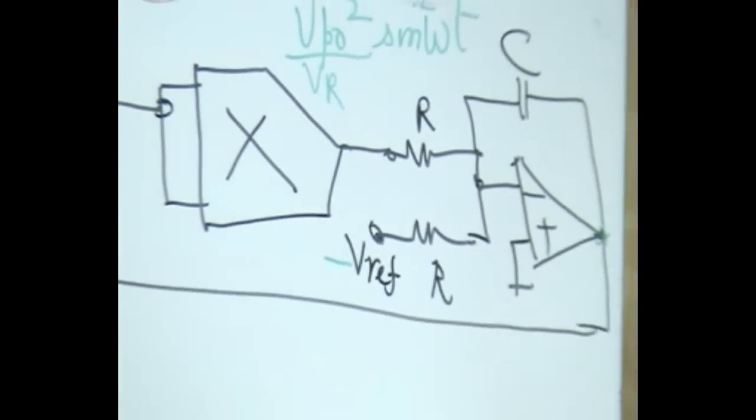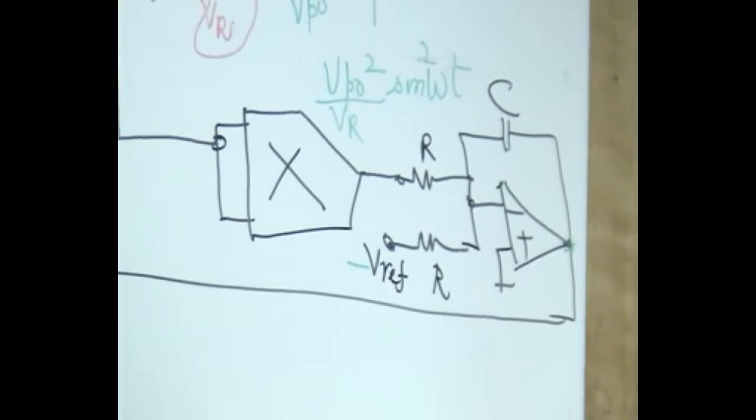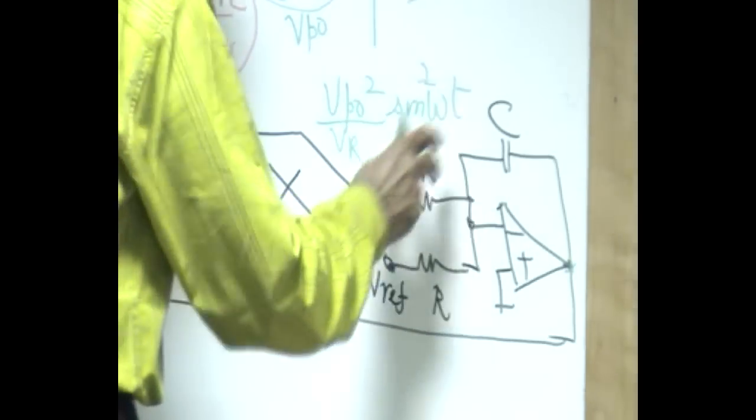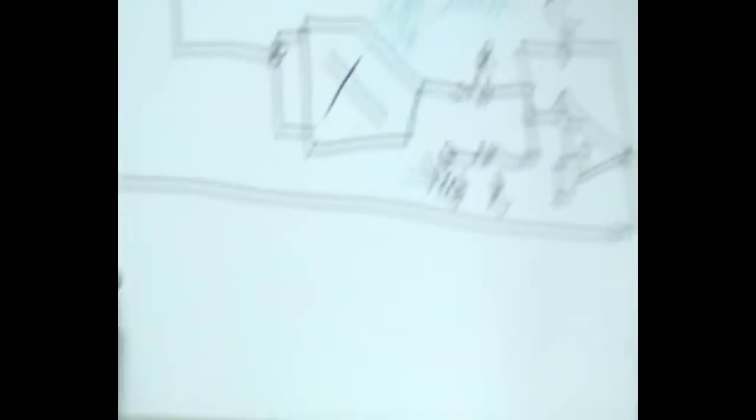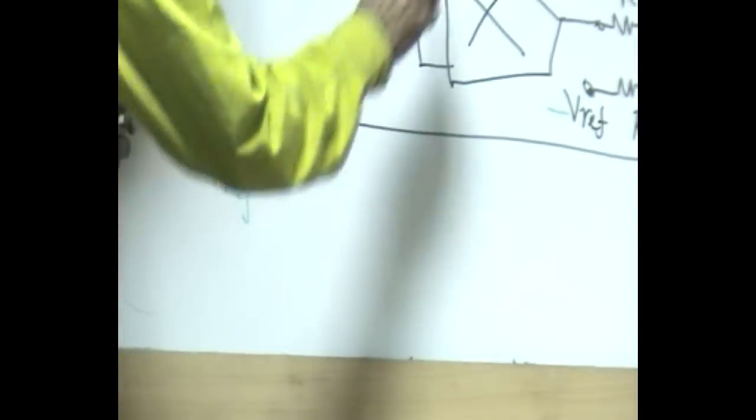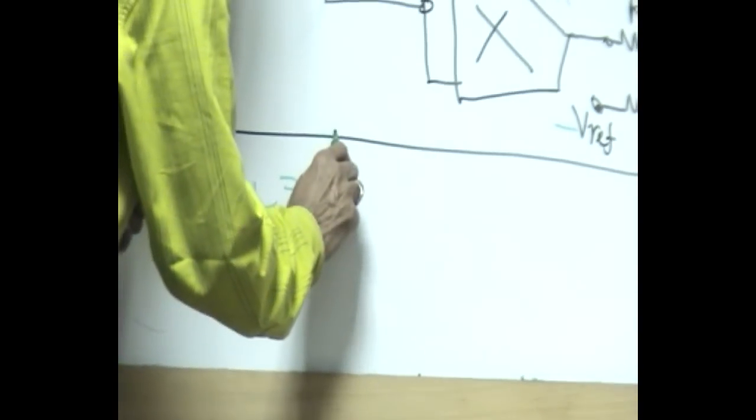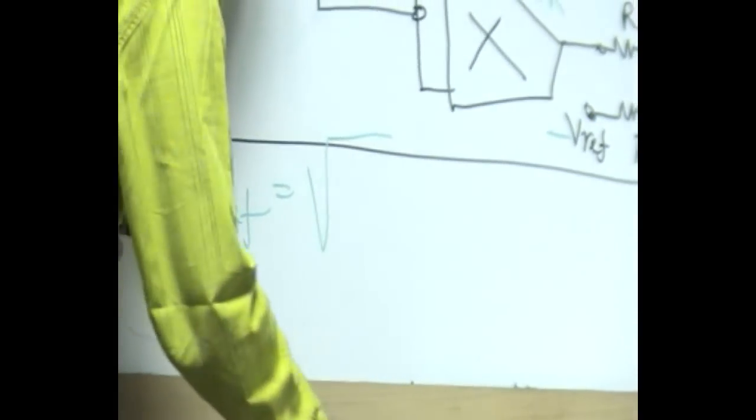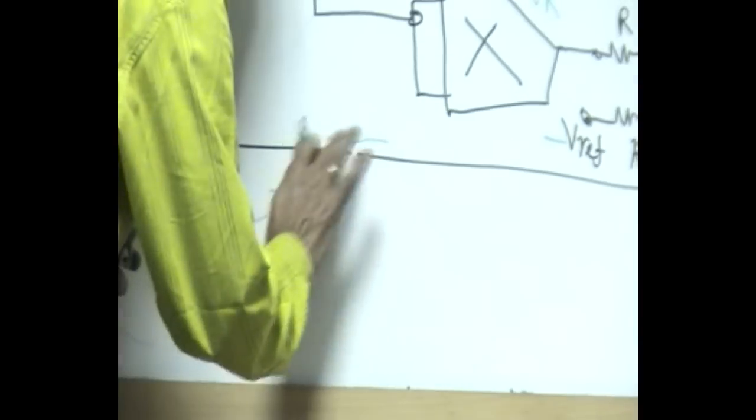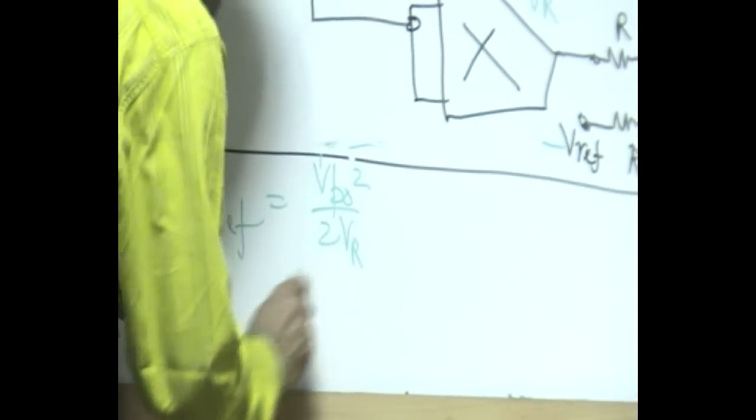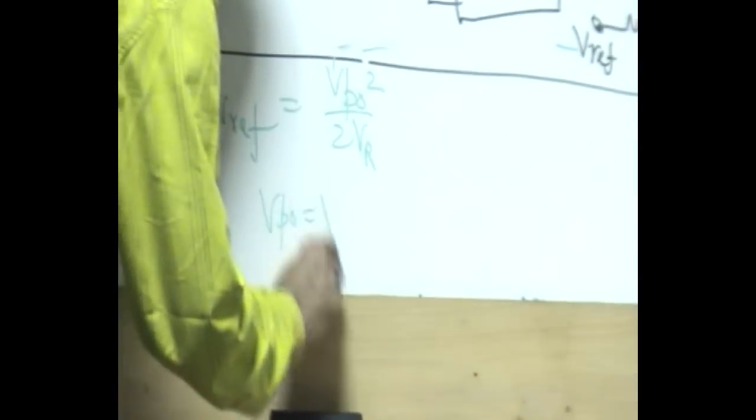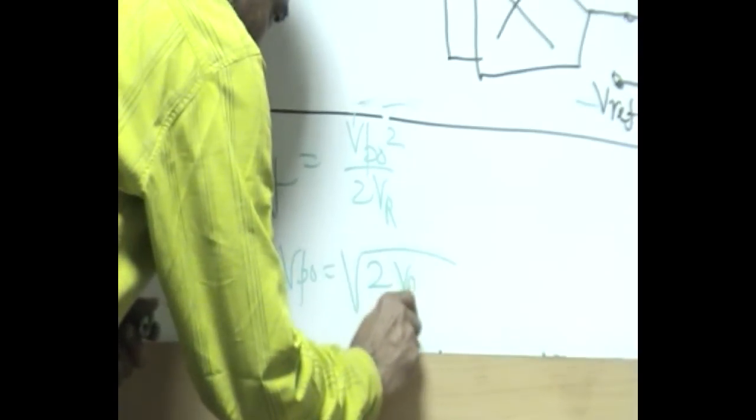If the capacitor does not charge, then the output of the amplifier remains constant. Now we want this output amplitude to become equal to V_reference, which equals V_po squared by 2V_r, or V_po becomes square root of 2V_r times V_reference.